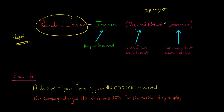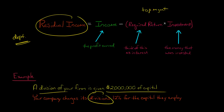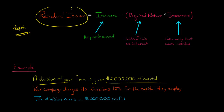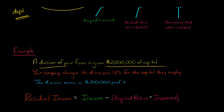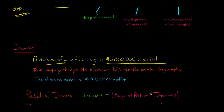So we'll do a more in-depth example. Let's say we've got a division at your company — they're given $2 million of capital. The company has a policy where each division is charged 12% for the capital they employ, so there's going to be a 12% capital charge on that $2 million. And then let's say the division has a $300,000 profit. So the question would be: what is the residual income?